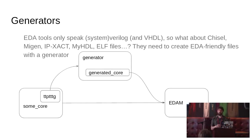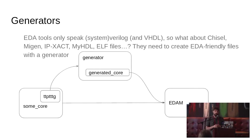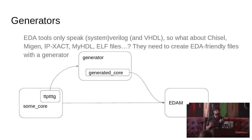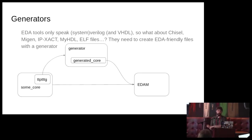Many things are not written in Verilog and VHDL. FUSUC doesn't know anything about the code — it just passes the files through. You can set the file type, but all file types need to be supported by the EDA tools. The EDA tools don't support Chisel, don't support MyHDL, don't support IP-XACT files, ELF files, or anything like that. So for those, we use a generator.